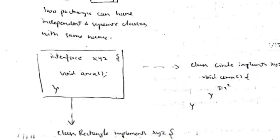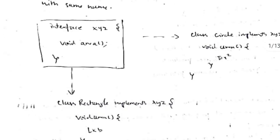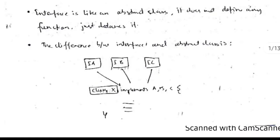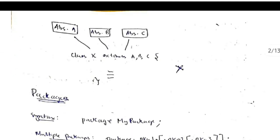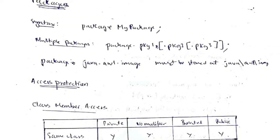An interface declares a function, and we can define it as we want using the keyword 'implements'. It is similar to an abstract class, but the difference is we can implement multiple interfaces, whereas we cannot extend multiple classes at the same time.